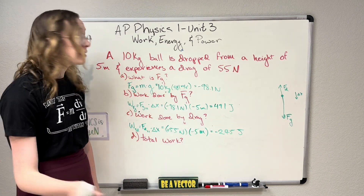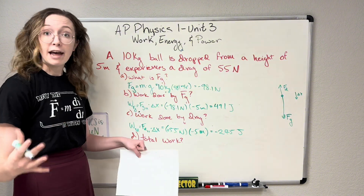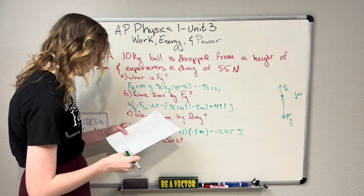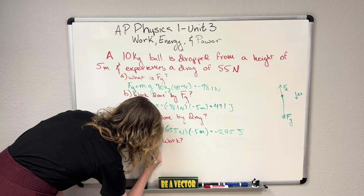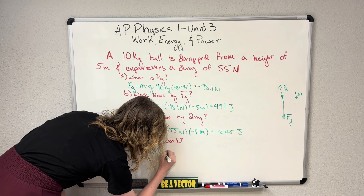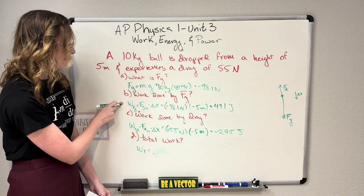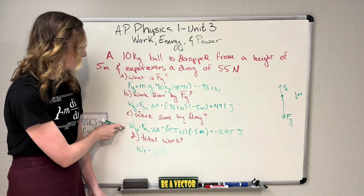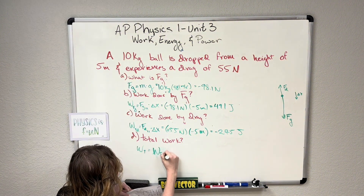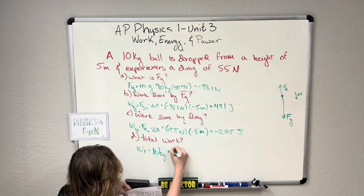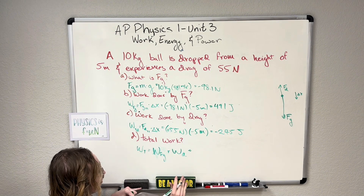How do we calculate total work? Just like when we calculated forces and summed them up to find the net force, we do the same thing here. Total work is equal to the sum of all our individual works, which here is just the work due to the force of gravity plus the work due to the force of drag.